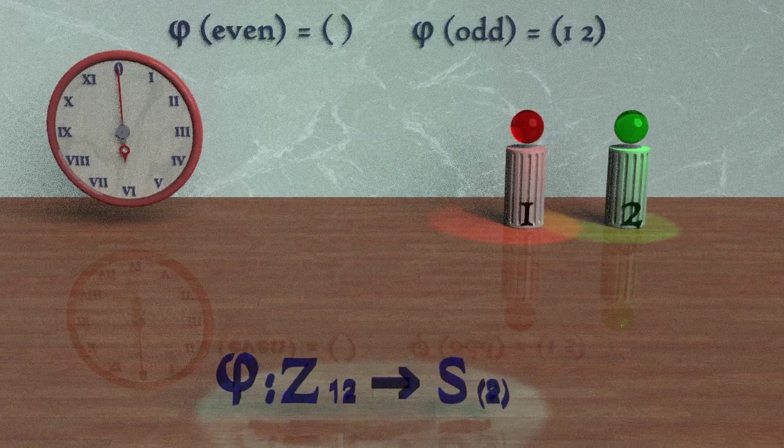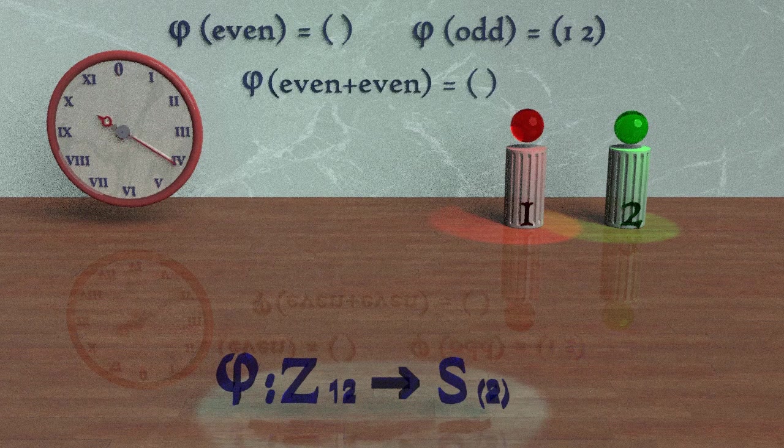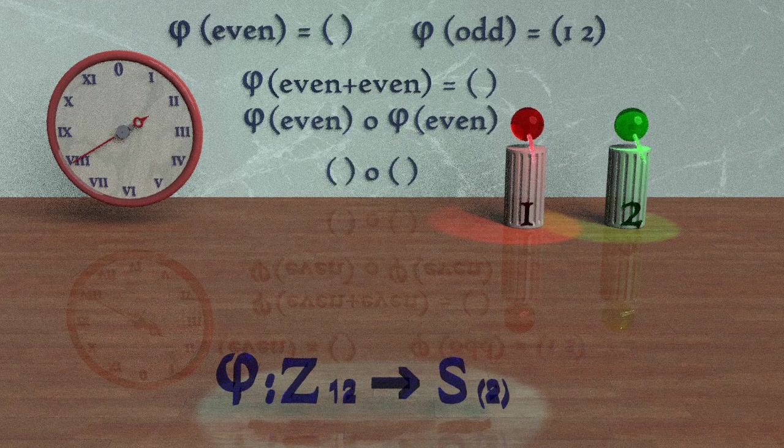In this video, we showed how a mapping from Z_12 to S_2 preserved the group structure, a mapping we called homomorphism.